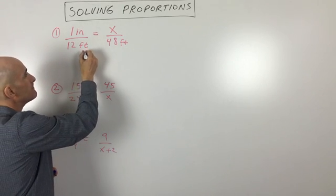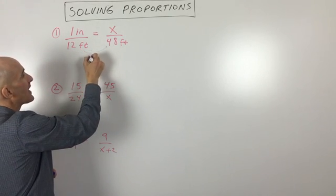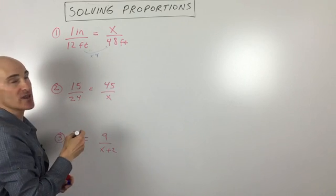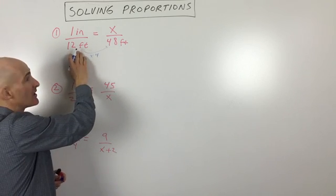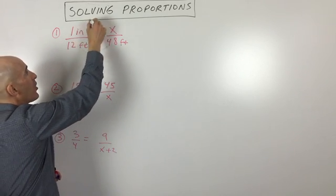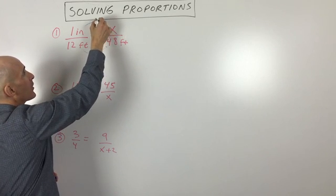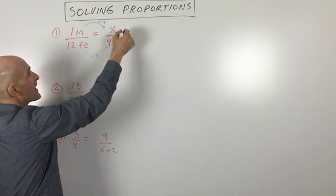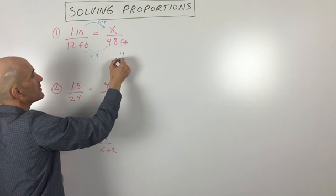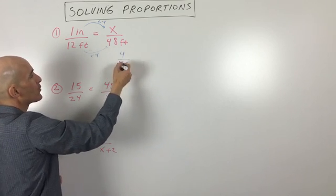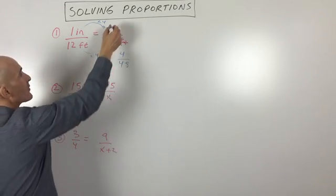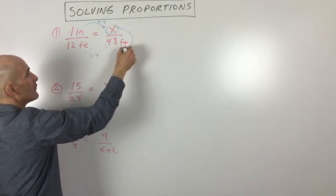So here what we're going to do is say, 12 times 4 equals 48. So if I multiply the bottom of this fraction by 4, I want to also multiply the numerator by 4. So you can see that x must be 4. And if you reduce this, 4/48 reduces down to 1/12. So you can see that our answer for x is 4.